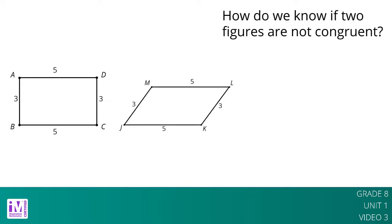Even though they have the same side lengths in the same order, 3535, the angles are different. All angles in ABCD are right angles.